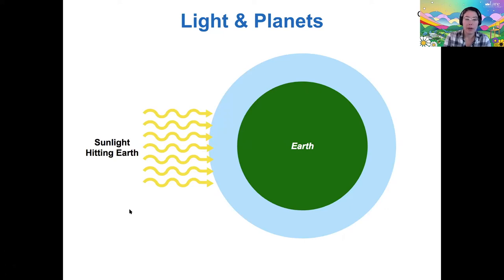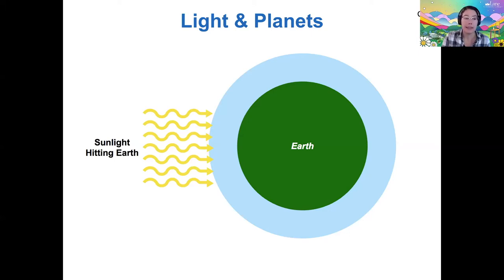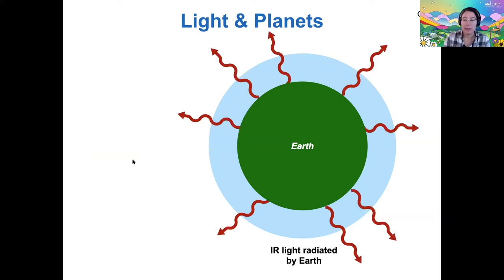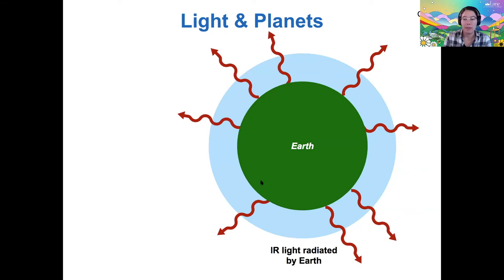Because energy can neither be created nor destroyed, there has to be some way that Earth gets rid of energy equal to the amount of sunlight that hits it. Earth is a warm object — it has some temperature greater than that of space — and so because of that it is radiating infrared light. Infrared light, you might know it as heat; it's essentially a longer-wavelength form of light. Any object with a non-zero temperature creates some kind of radiation.